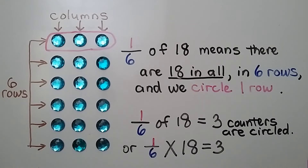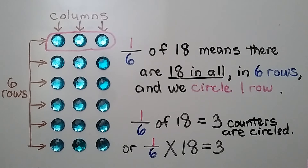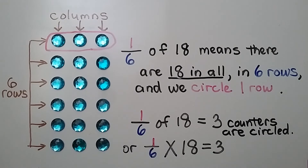One-sixth of eighteen means there are eighteen in all, in six rows, and we circle one row — one of the six rows. One-sixth of eighteen is equal to three counters that are circled. It's also one-sixth times eighteen, and that's equal to three.